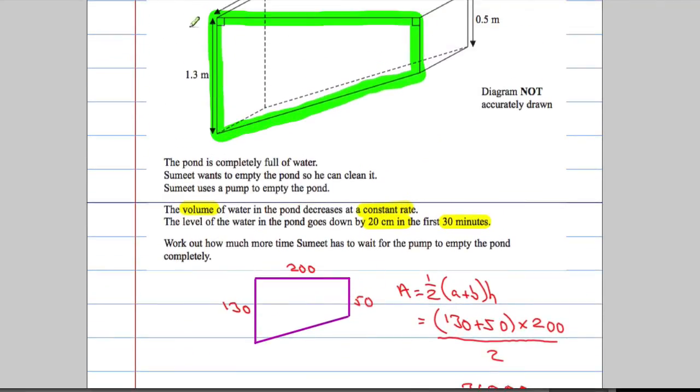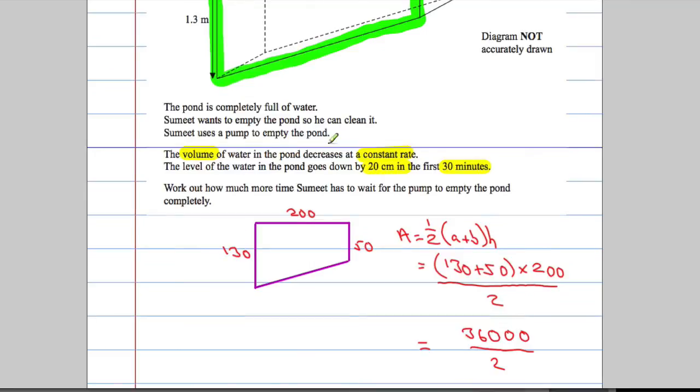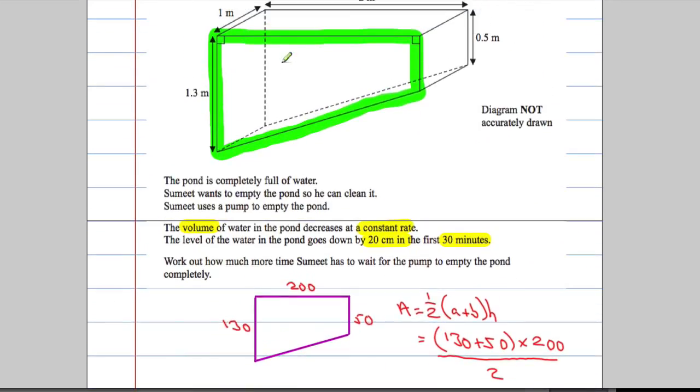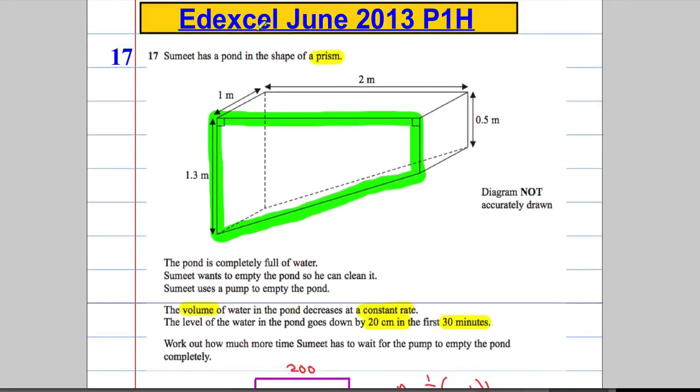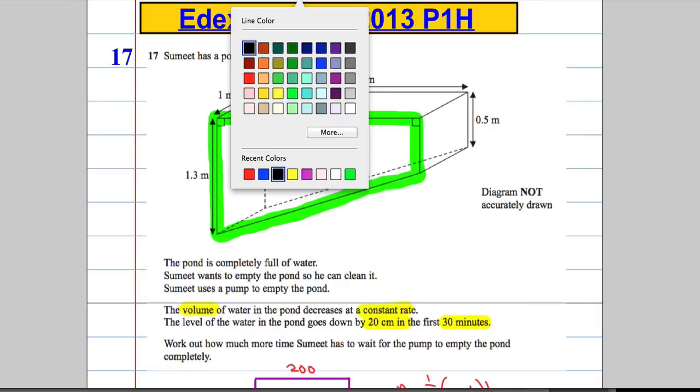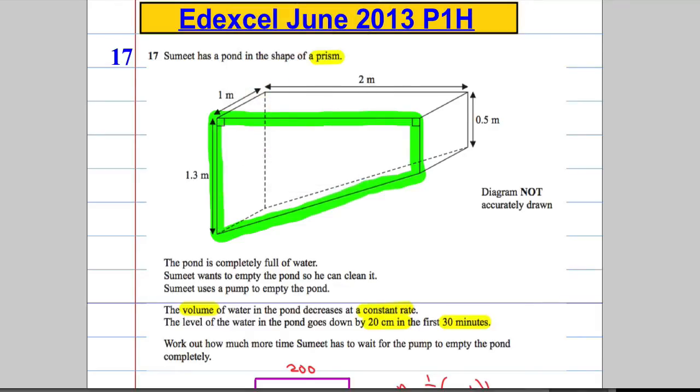Now we need to work out what was the volume of water that left. It changed by a depth of 20 centimeters. If it goes down by 20 centimeters, I'd love to know what that volume is. If you look closely at the diagram and consider this part, I'm only interested in this region which effectively is a cuboid.